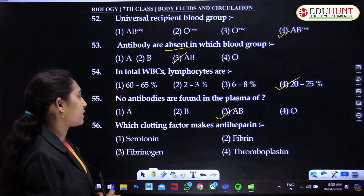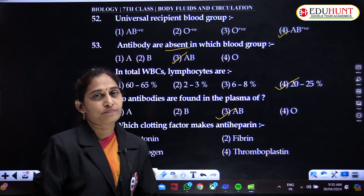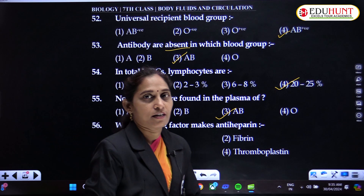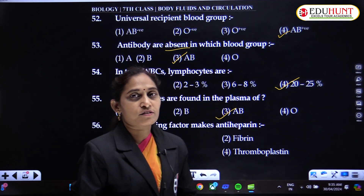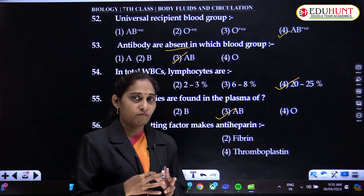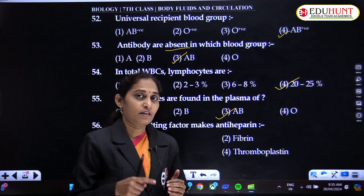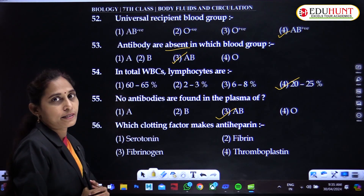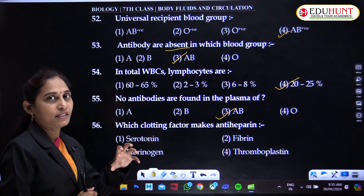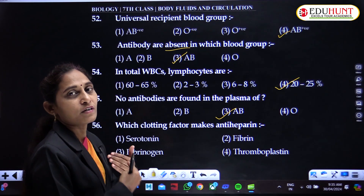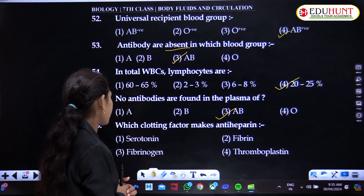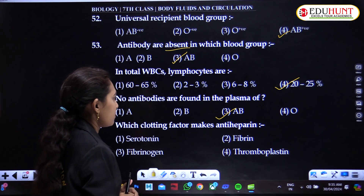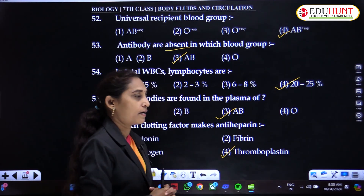Which clotting factor acts as anti-heparin? Heparin prevents clotting of blood while it is in the vessel, which is why blood flows freely throughout the body. Anti-heparin suppresses heparin activity, causing clotting. The anti-heparin is thromboplastin.